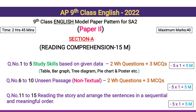Now Paper 2, Section A: Reading Comprehension for 15 marks. Questions 1 to 5 are study skills based on given data such as a table, bar graph, tree diagram, pie chart, or poster. The way questions are asked is completely different — 2 WH questions and 3 MCQs, 5 ones for 5 marks.